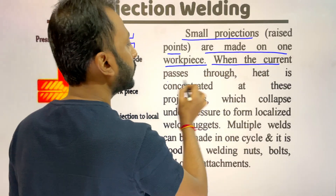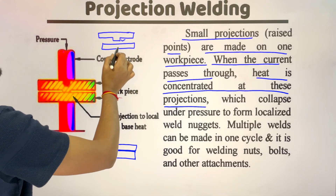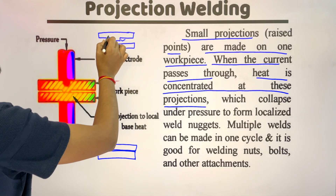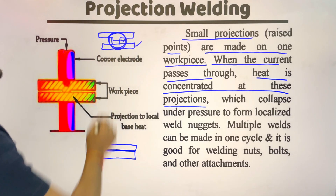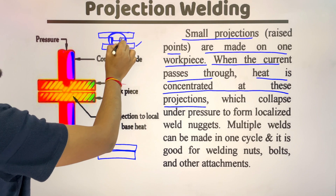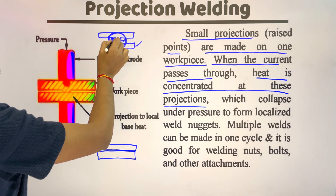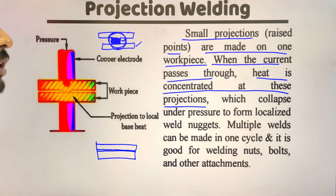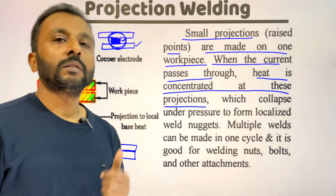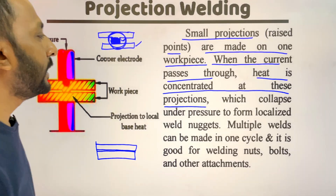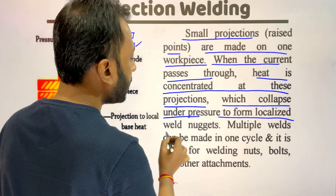When the current passes, heat is concentrated at these projections. The projected area will contact the other plate, so heat passes through that projected area. The projected area melts faster than in spot or seam welding because the contact area is very small, so heat is concentrated only at that area. Under pressure the projections collapse to form localized weld nuggets.